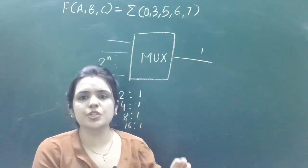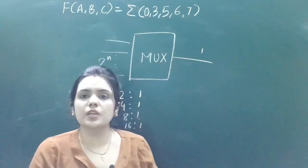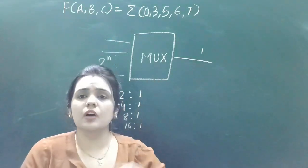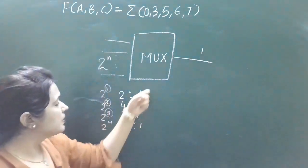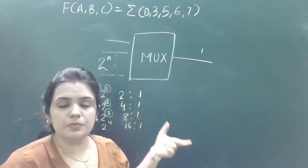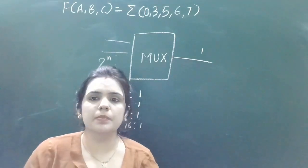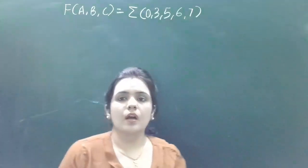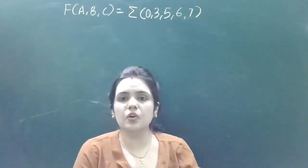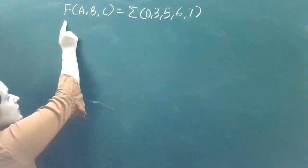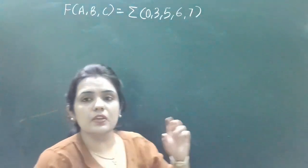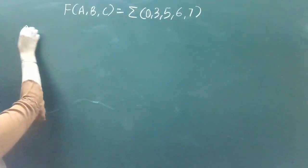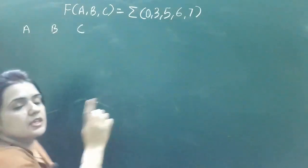This is just an introduction to multiplexers. Now we have to implement this Boolean function with the help of a multiplexer. We will cover: which multiplexer should be selected, how to make an implementation table, and how to make the final circuit diagram. So first, let's start with this equation. The Boolean function f(A,B,C) means f is the output and A, B, C are the three input variables.